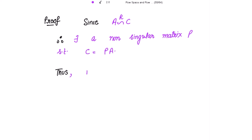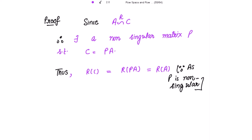Thus, the row space of C equals the row space of PA, and because P is a non-singular matrix, by the second result this is further equal to the row space of A. So the row space of C equals the row space of A.